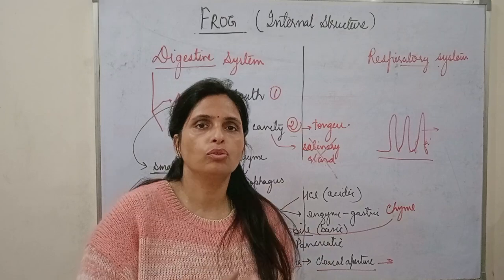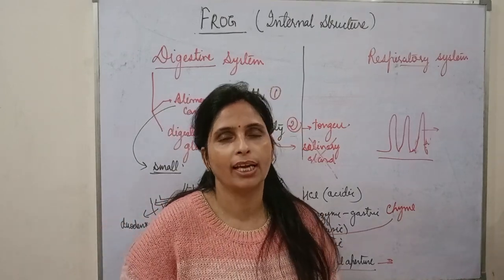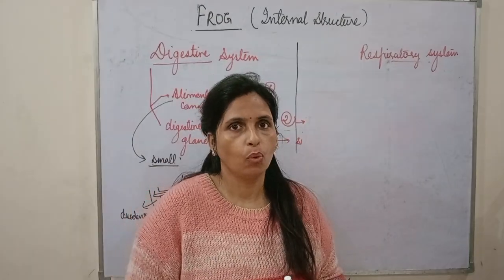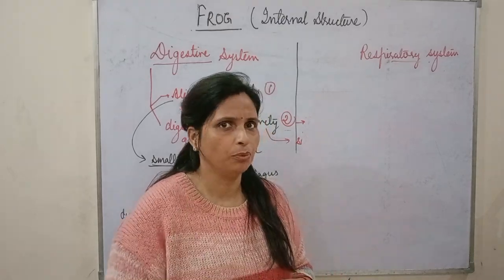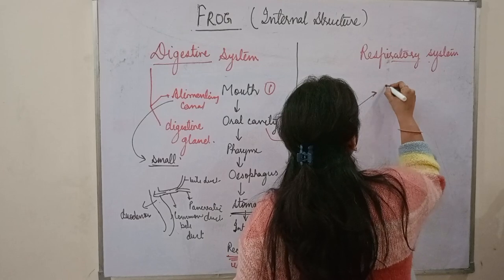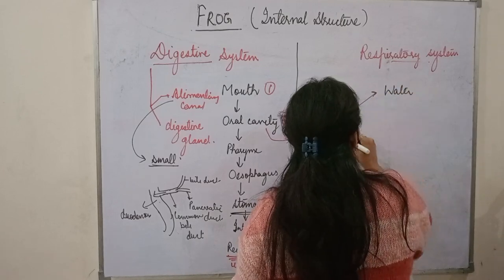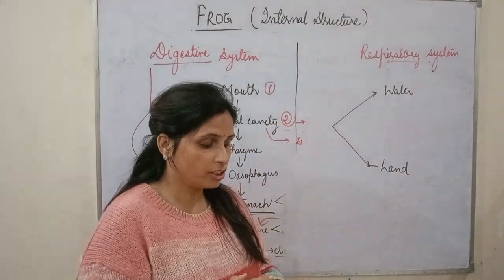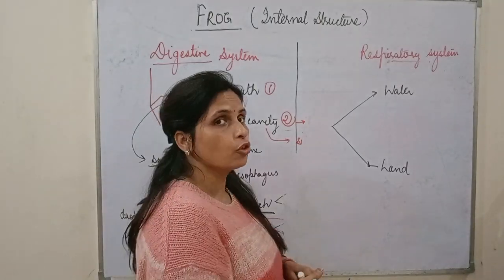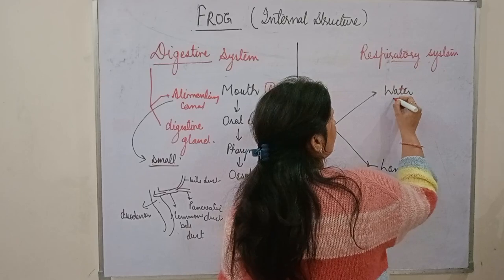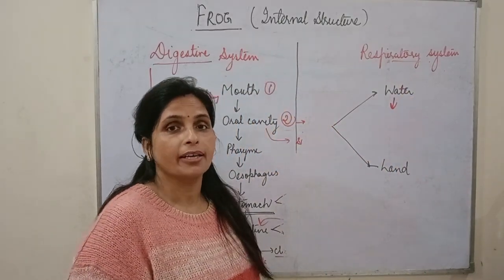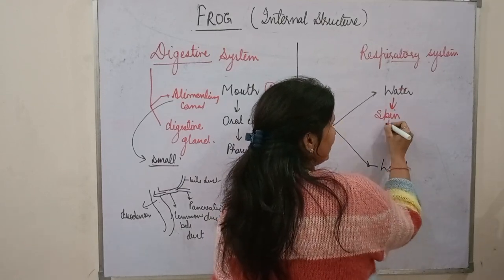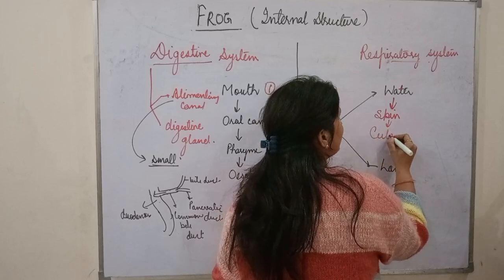That is about the digestive system of frog, which is very similar to that of a human. The second system we will take is the respiratory system. As we know, frog is an amphibian, meaning it lives both in water and on land. In case of water, the main way by which the frog respires is through the skin — this is called cutaneous respiration.